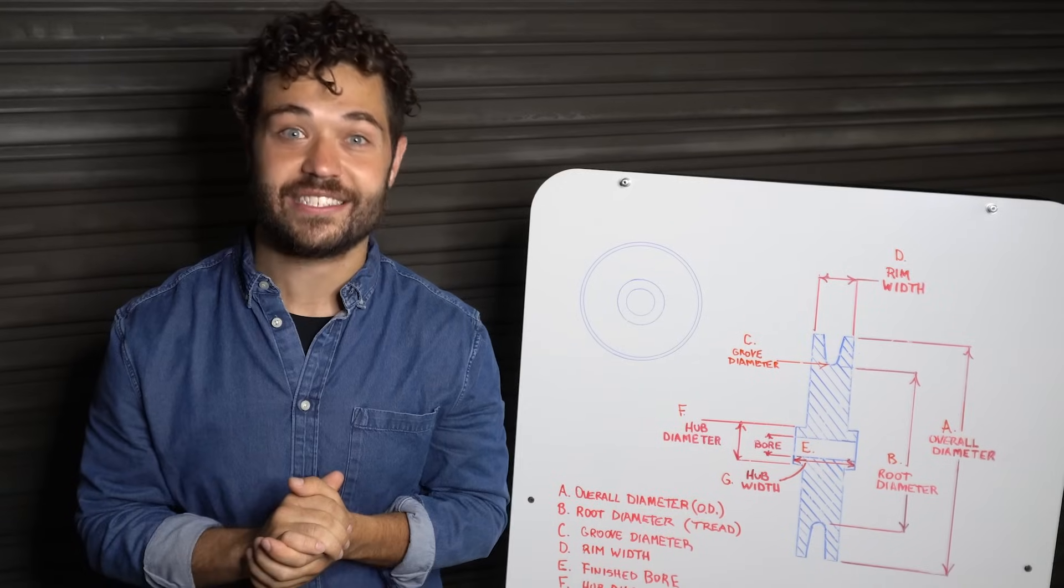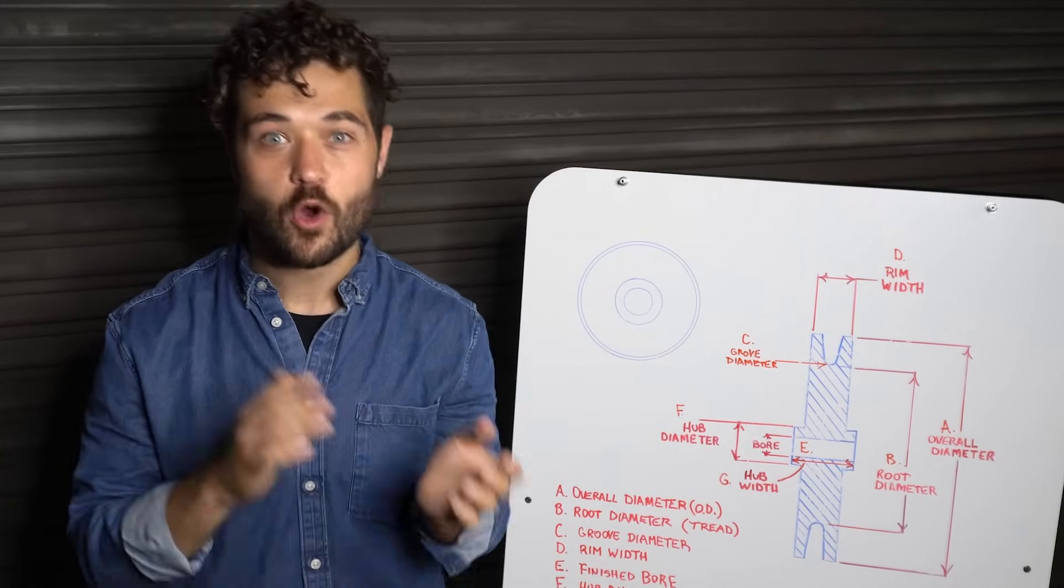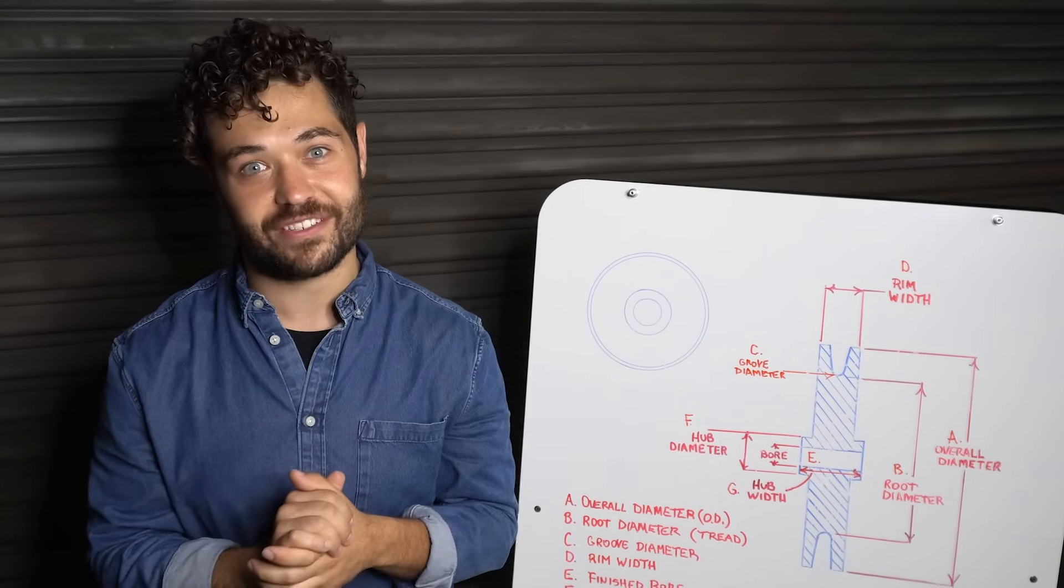Our instant quote tool also has different options like bearings, weight reduction holes and more that you can add to your shivs.